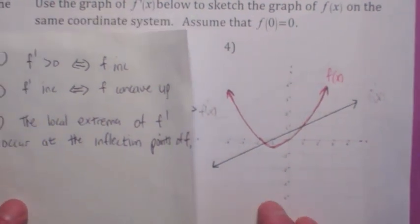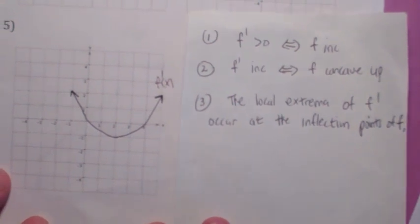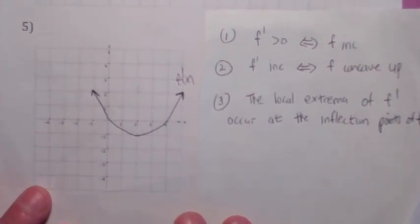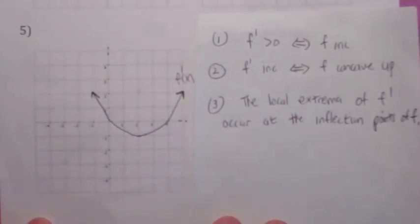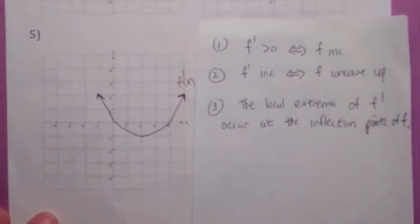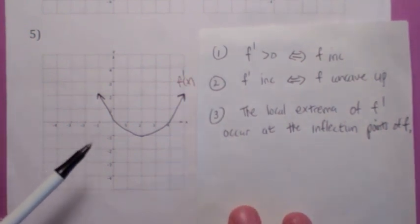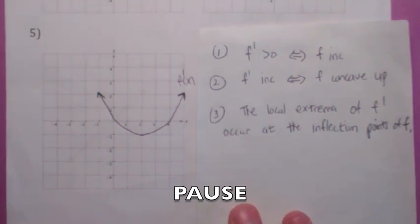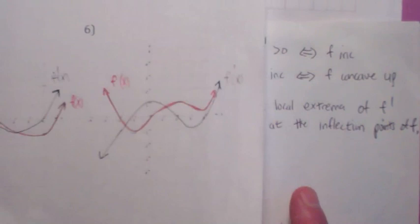Alright, let's do some more. Let's look at number 5. See if you can hit the pause button and sketch the graph of the actual function. I'm giving you the derivative, I want you to sketch the graph of f of x. We're assuming that f of x goes through 0, 0, and has this for the derivative graph. Hit the pause button.